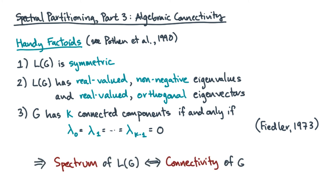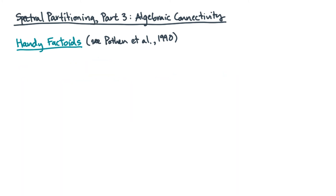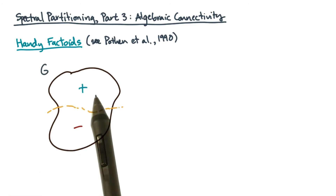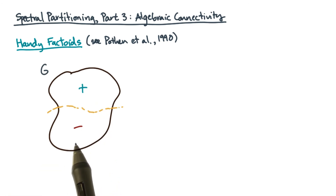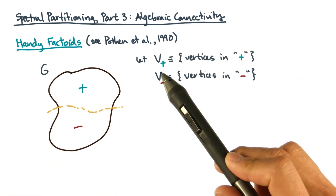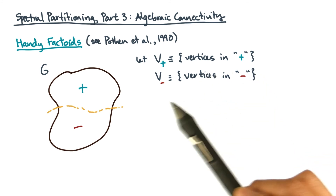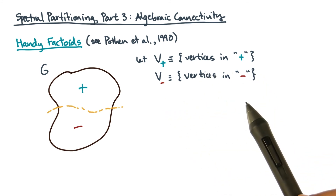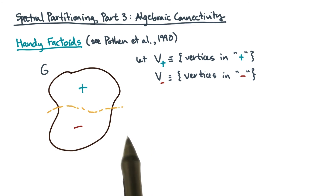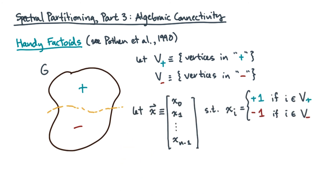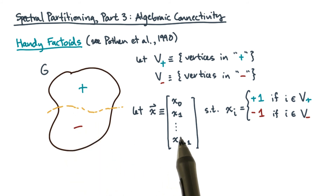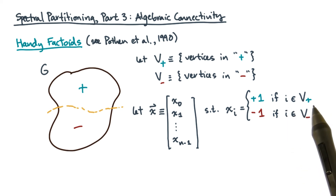Here's one more important fact. Let's say you have a graph that's been partitioned into two pieces: one piece is the plus piece and the other piece is the minus piece. Let v-plus be the set of vertices in the plus piece and v-minus the set of vertices in the minus piece. On the linear algebra side, let's define a vector x with respect to this partition, where each entry of x corresponds to a particular vertex. We assign that entry a positive one if the vertex lies in v-plus and a minus one if the vertex is in v-minus.